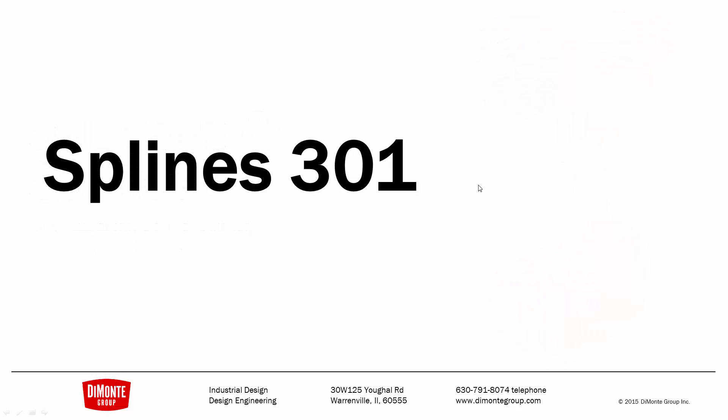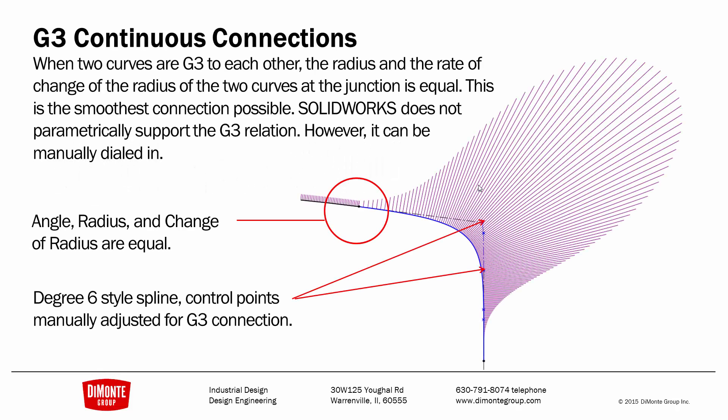Previously we took a look at sketching splines and connecting splines smoothly to other sketch geometry. This week we'll look at the last kind of connection. We looked at G1 tangent and G2 equal curvature previously, and this week we'll look at curvature continuous connections, or G3. Two curves are G3 to each other if the angle of the curve is equal at the junction, the radius is equal, and the change in the radius at the junction is equal.